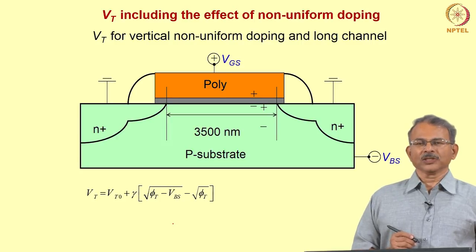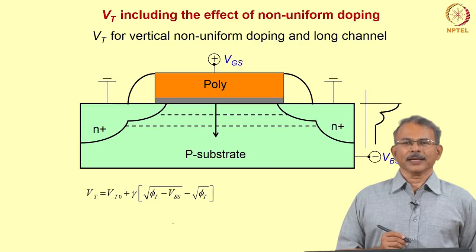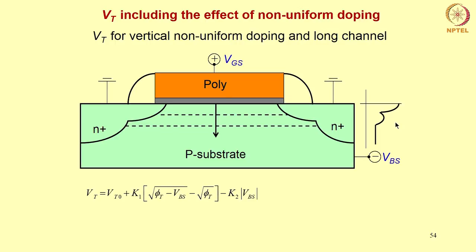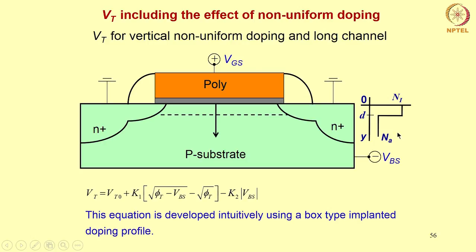For Vt with vertical non-uniform doping and long channel, if you have a non-uniform doping profile, the threshold voltage formula replaces γ with k1, a higher body effect parameter due to increased doping. Additionally, there is a term proportional to Vbs that tends to decrease the threshold voltage as Vbs increases. This equation was developed using a box-type approximated doping profile, and by adjusting k1 and k2 you can fit the actual non-uniform doping profile.